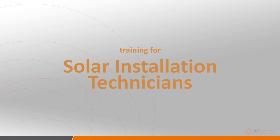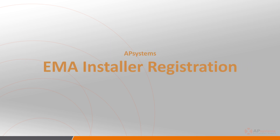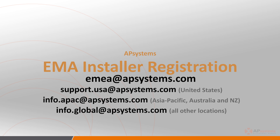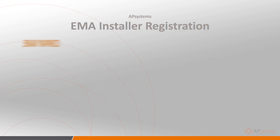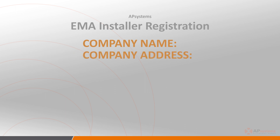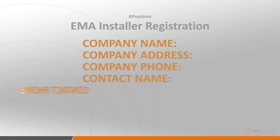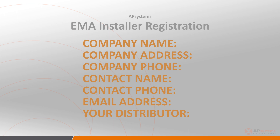Before we get started on the actual training, let's take a few seconds to talk about getting yourself registered as an installer with AP Systems. If you've not already done so, email AP Systems Technical Services at EMEA@APSystems.com, or fill out the registration form on the AP Systems website to get yourself registered. Please be ready to provide the following information: company name, company address, company phone number, contact name, contact phone number, contact email address, and the name of your distributor.